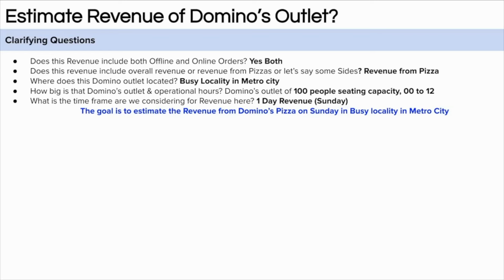Third: where is the outlet located? A busier outlet sells more pizza. Let's assume a metro city in a busy area. Fourth: outlet configuration — how big, what are the hours? Let's assume the outlet accommodates around 100 customers and operates from 12 noon to midnight — 12 hours total. Fifth: timeframe — let's assume daily revenue on a weekend (Sunday). The goal is to estimate the daily revenue of Domino's from pizza in a busy metro city location.